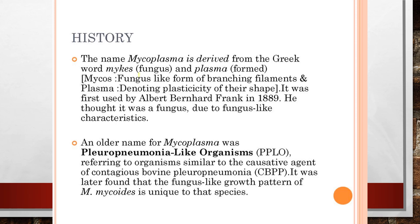Mycoplasma particularly infects the serum or the flora of the technician's mouth, spread by droplet infection. The name Mycoplasma is derived from the Greek words mycos (meaning fungus) and plasma (meaning formed), denoting plasticity of shape. It was first used by Albert Bernhard Frank in 1889, who thought it was a fungus due to its fungus-like features. The older name is PPLO, referring to organisms similar to the causative agent of contagious bovine pleuropneumonia. The fungus-like growth pattern of Mycoplasma mycoides is unique to that species.